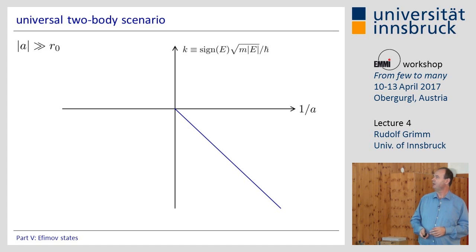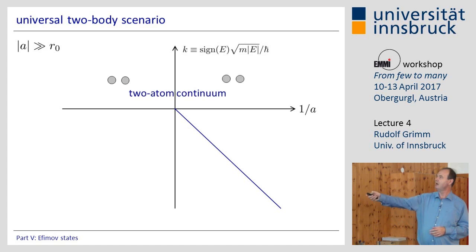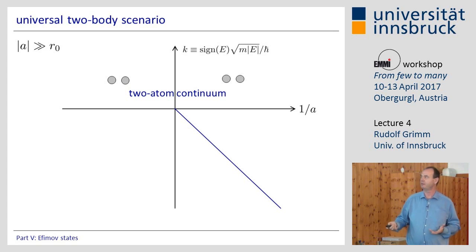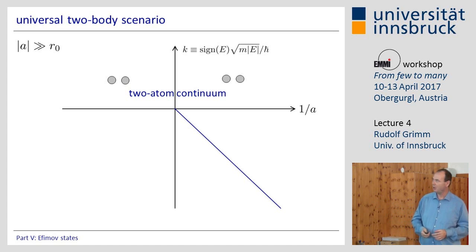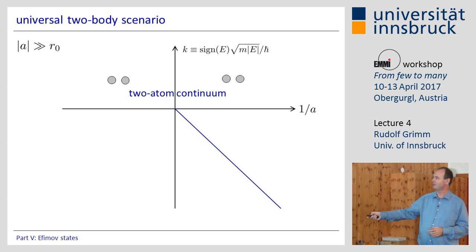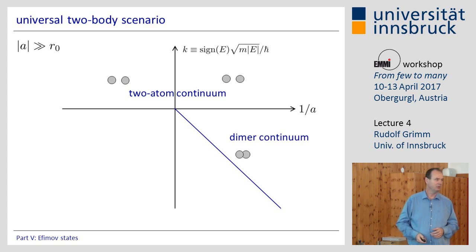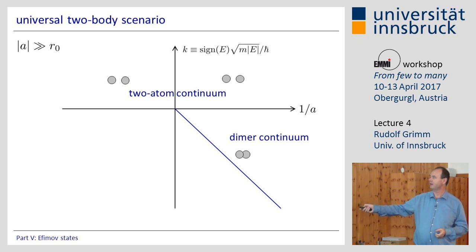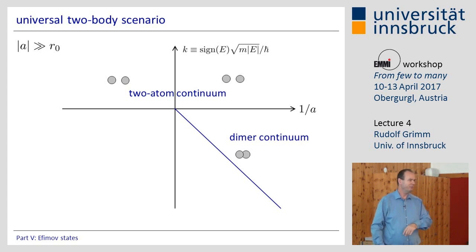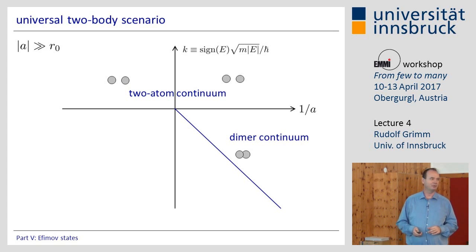Above the threshold, the only thing we can have is an atom pair — two atoms that can exist as a pair with some additional kinetic energy. Below this threshold and above that threshold, what we can have is a dimer: two atoms bound together with some kinetic energy. So this is the dimer threshold. If we have some kinetic energy, we are up here. This is the two-dimensional world — very simple and exactly what you have seen before, just presented in a slightly different way.